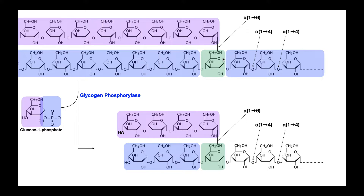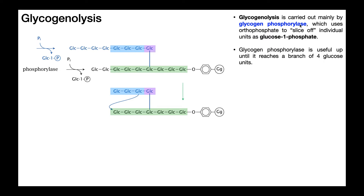Let's take another look at what glycogen phosphorylase does. Down here on the bottom, this is the primary chain of glycogen, ultimately probably connected to glycogenin, and then coming off the green glucose, these in pink, this is a branch chain. Remember, glycogen is highly branched. Glycogen phosphorylase uses phosphates to cleave off individual glucose units, so when it does that, these glucoses will be removed as glucose 1-phosphate. You're getting glucose 1-phosphates from the branch chain and also from the primary chain. You'll cleave them off eventually and end up with something like what's shown at the bottom. So the bottom line is that glycogen phosphorylase is going to use phosphate to slice off individual glucose units as glucose 1-phosphate.